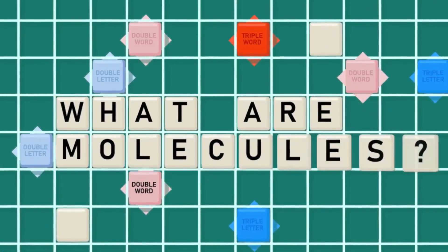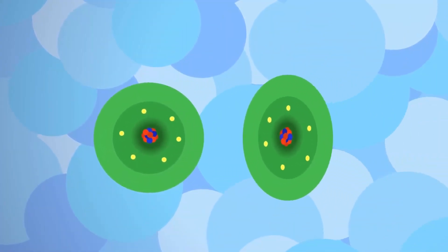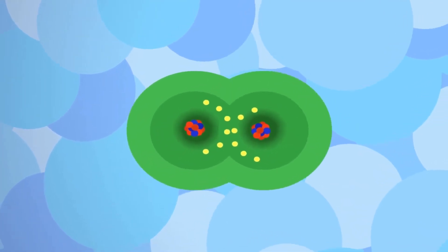What are molecules? Unlike the elements that have only one type of atom, molecules are formed by two or more atoms that are chemically combined.